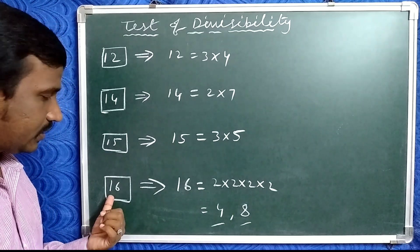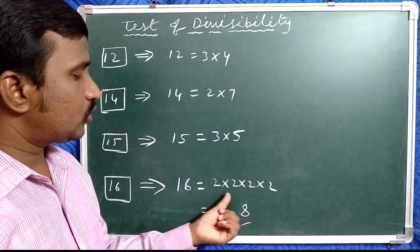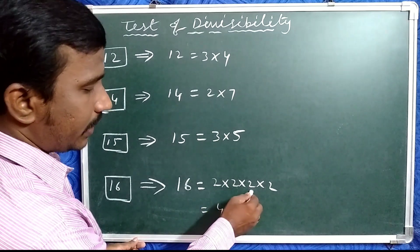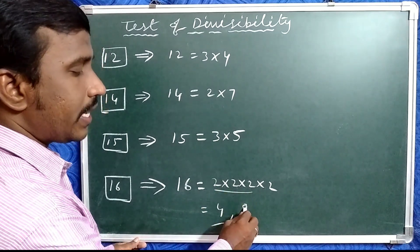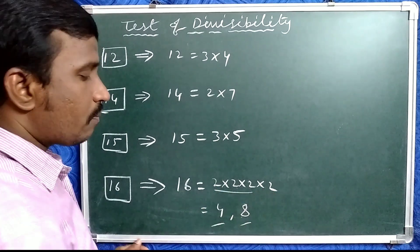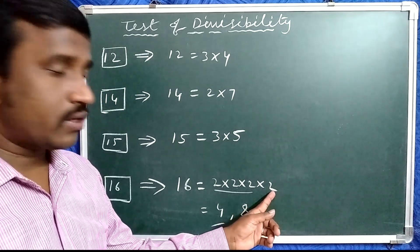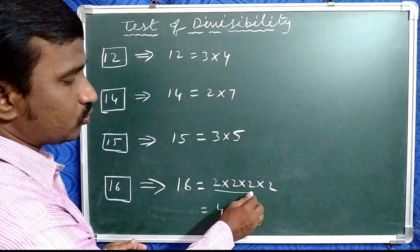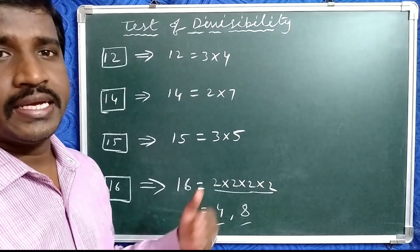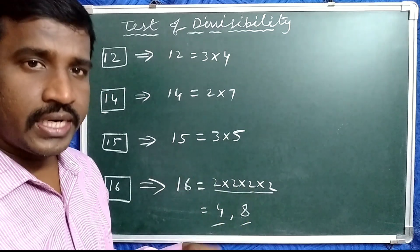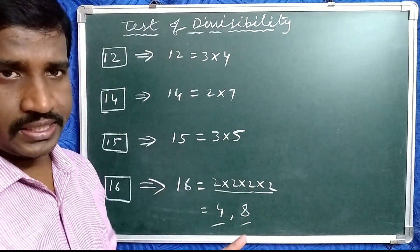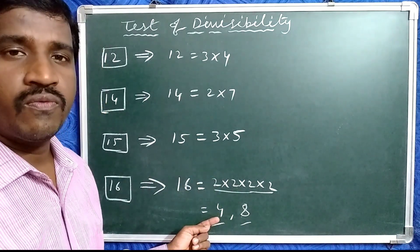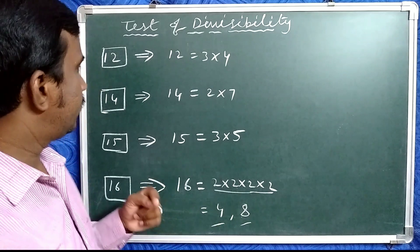Now, for 16: 16 can be written as 2 times 2 times 2 times 2. Since 2 times 2 is 4, and 4 times 2 is 8, and 8 times 2 is 16 — and 2 is also a factor of 8, so we take 4 and 8. Any number exactly divisible by 16 is also exactly divisible by 4 and 8.